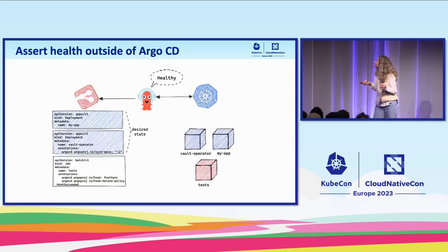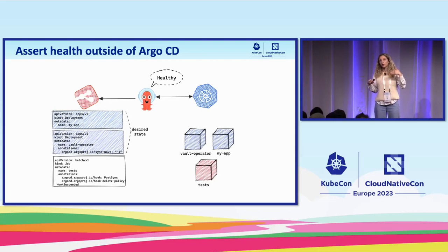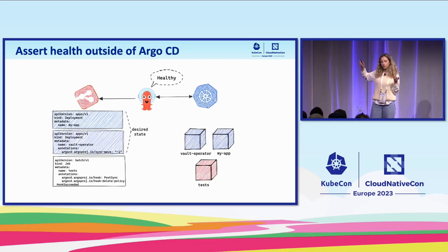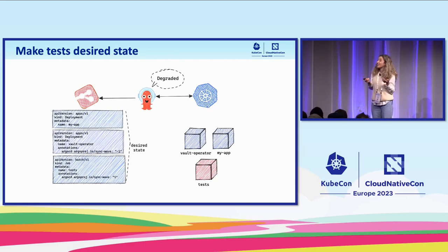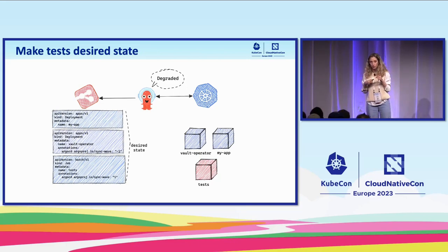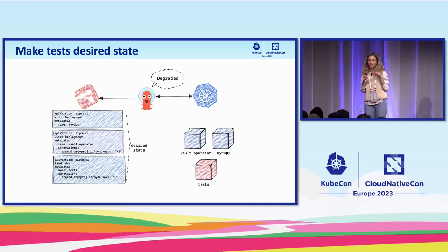So what can we do? The first option is to assert health outside Argo CD. Argo CD will say it's healthy, but output extra information about phases that failed — particularly the hook. I can take that output and parse it in Argo Workflows and decide based on that. The workflow will parse this output and, in this case, stop and roll back. Another option is to make the test desired state by removing the sync hook and using a sync wave instead. To have jobs synced every time you need to remove them beforehand — achievable with a pre-sync hook — but I would not recommend this unless you have no other option.